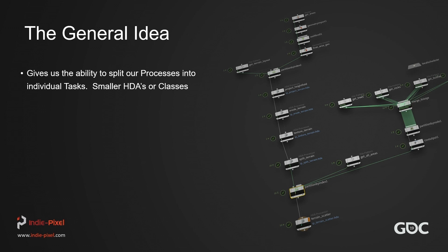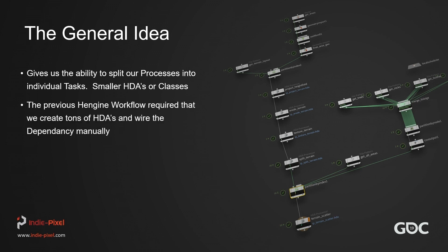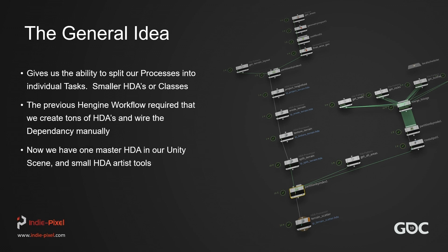The general idea is that PDG gives us the ability to split our processes into individual tasks — smaller HDAs. Think of these like classes if you're coming from a programming background. The previous Houdini engine workflow required creating tons of HDAs and wiring dependencies manually. Now we have one master HDA in our Unity scene and a bunch of small HDA artist tools.